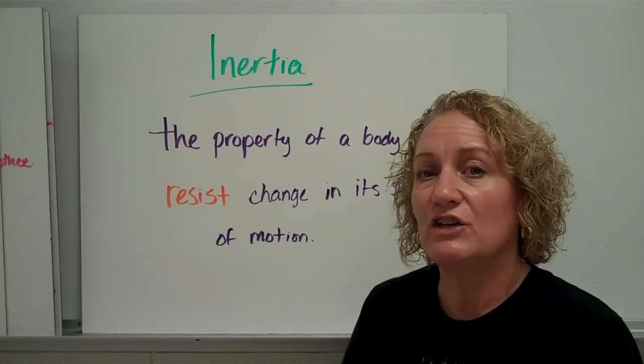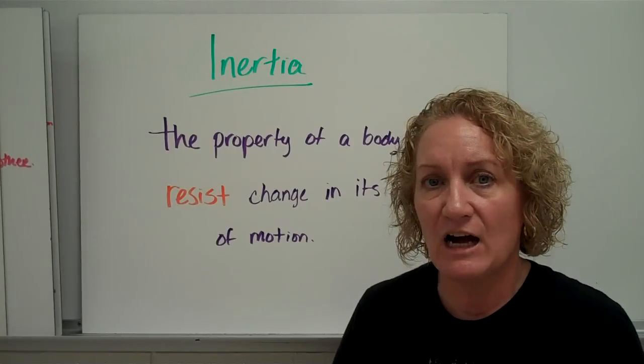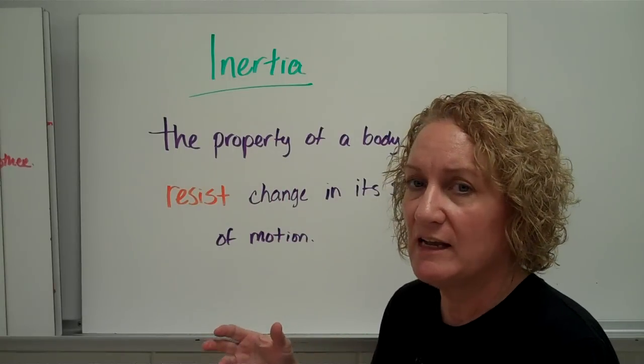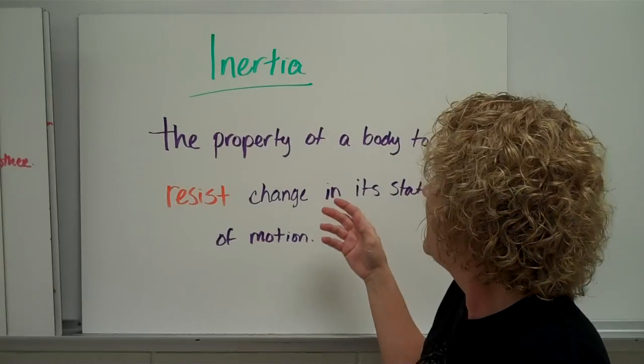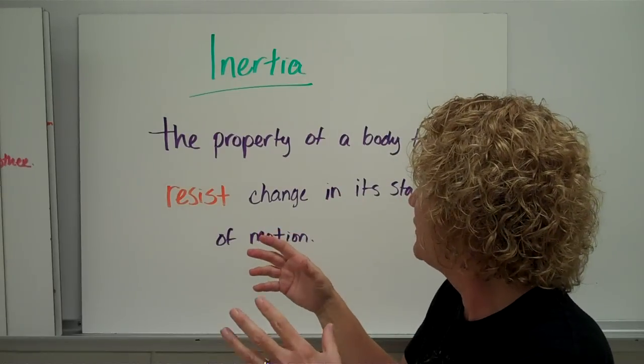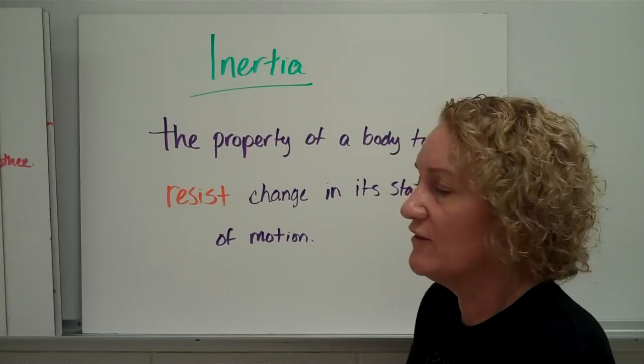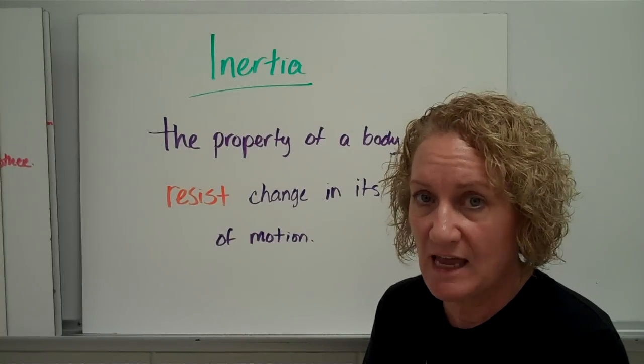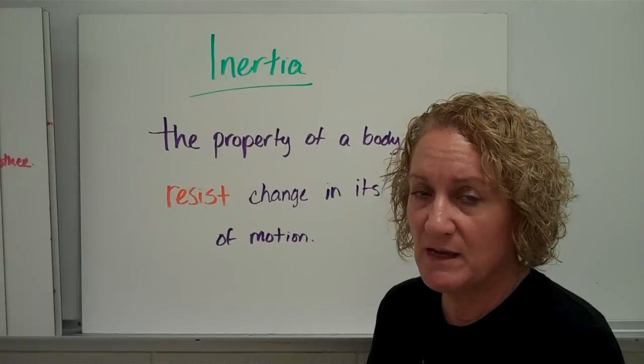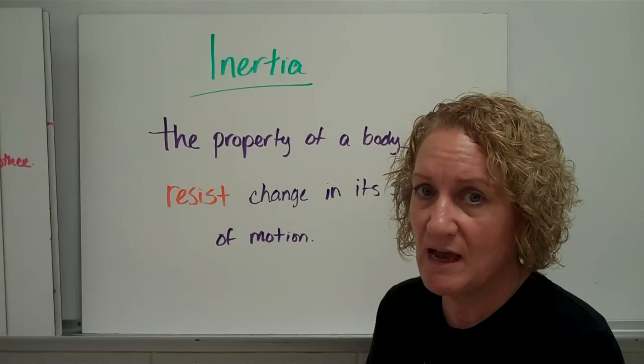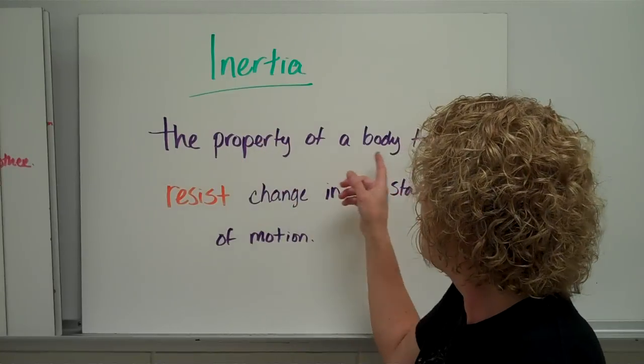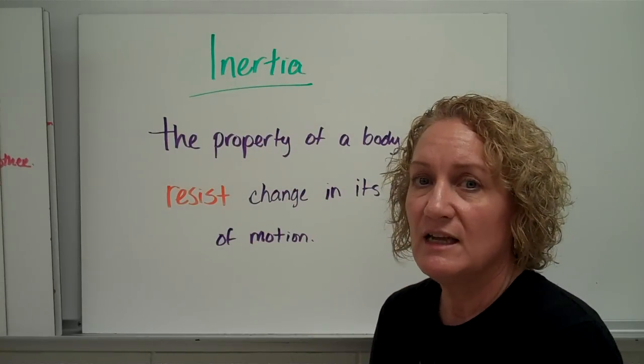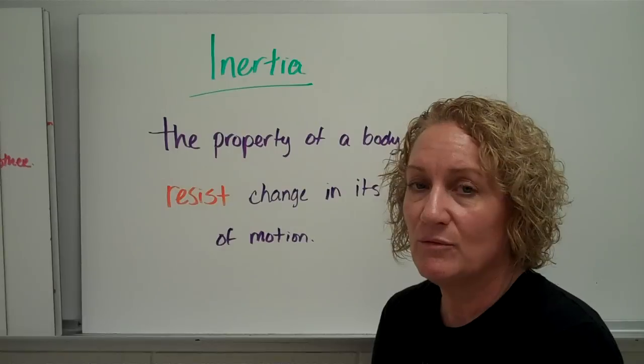He called that inertia. Inertia. And what inertia is, is it's a property of a body. It's a property of an object that says how much it's going to resist change in its state of motion. It doesn't want to change. It wants to stay the same. If it's in motion, it wants to keep being in motion. If it's at rest, it wants to keep being at rest. Inertia is the property of a body to resist change in its state of motion. It wants to keep doing what it's been doing.